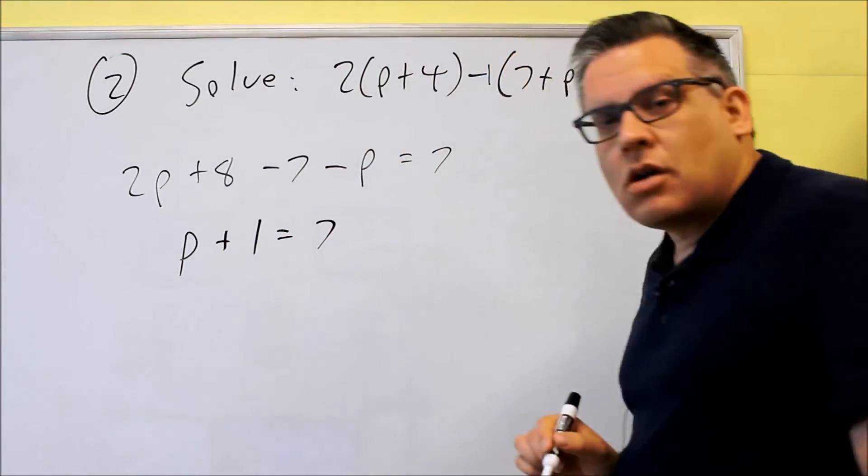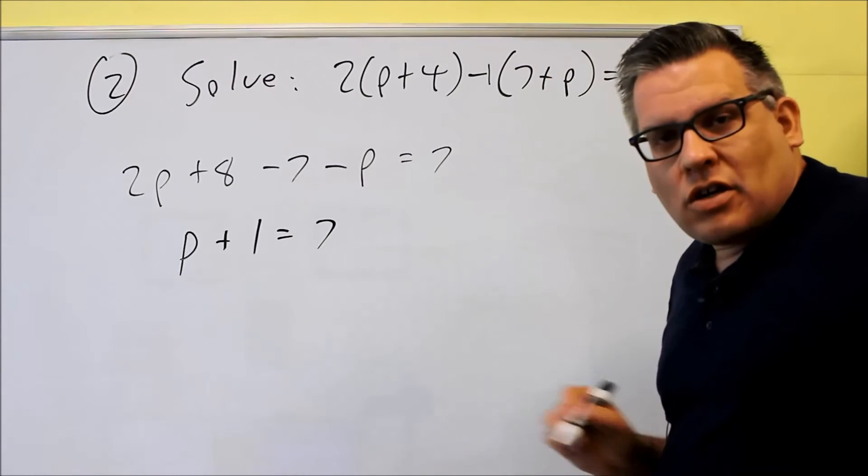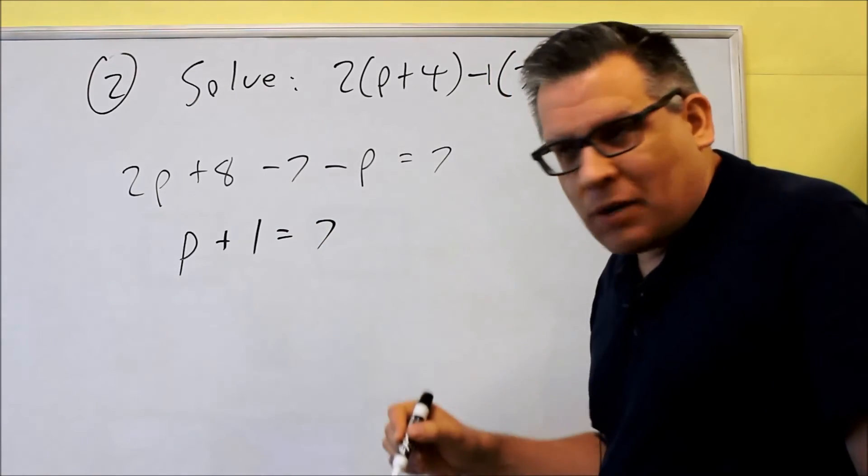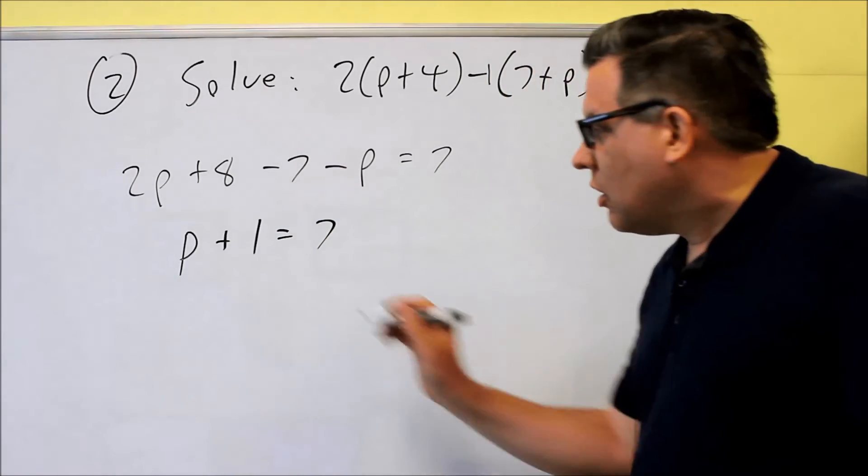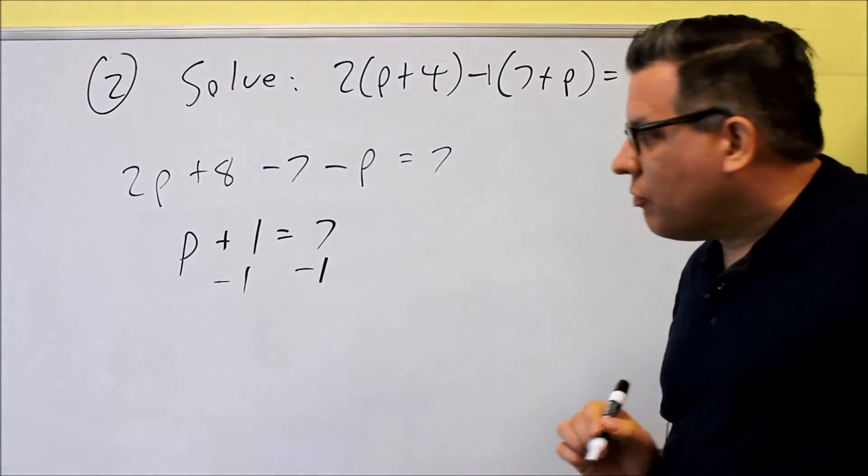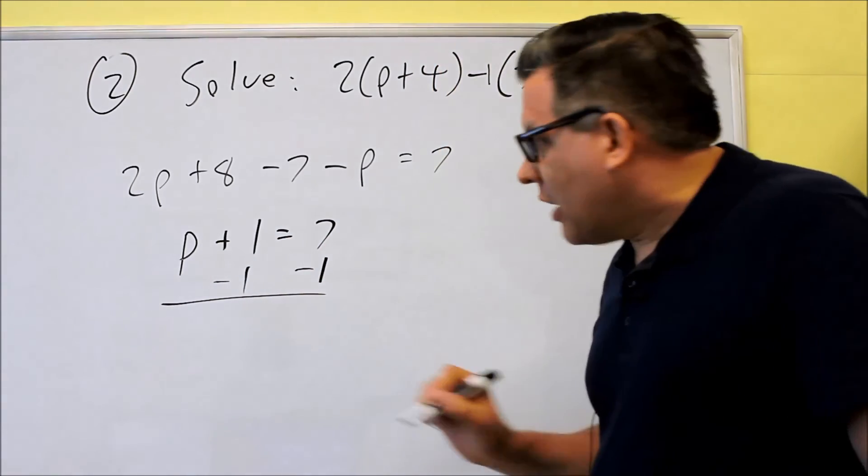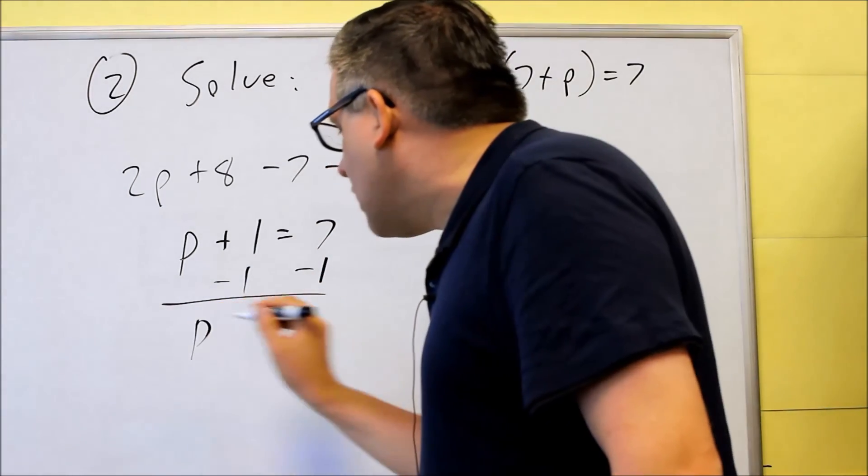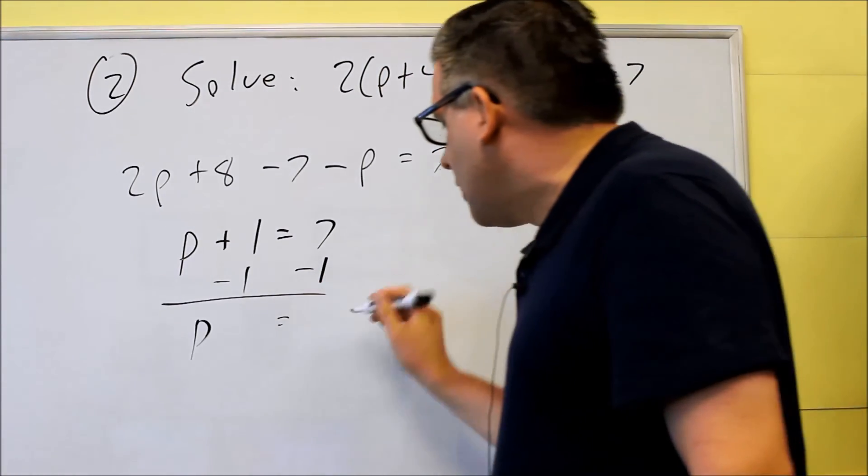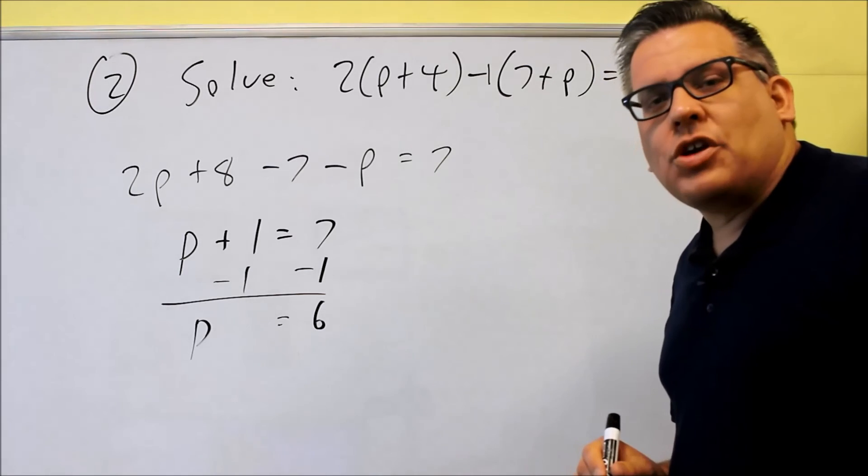Now the last thing I want to do is I want to isolate and solve for p. You always want to do the opposite operation. I have a plus one here. I want to do the opposite operation, which is subtract one from both sides. By doing that, the ones are going to cancel out and you get a zero for that. So I get a p here, and then seven minus one is going to give us six. So that would be our final answer, p equals six.